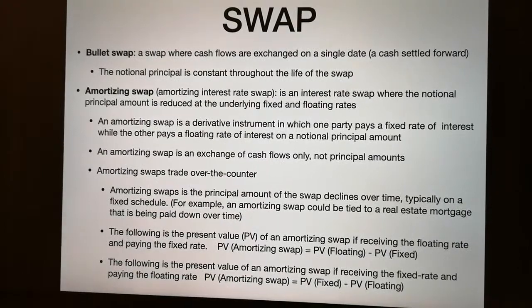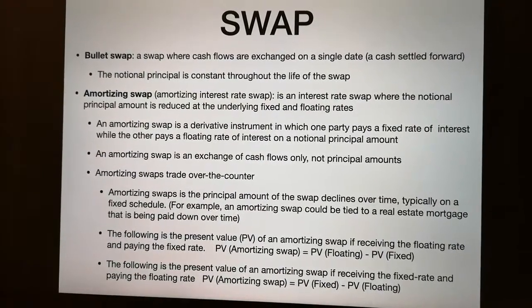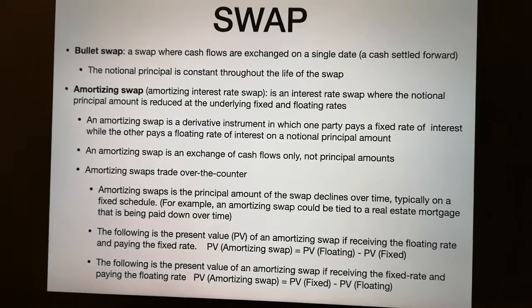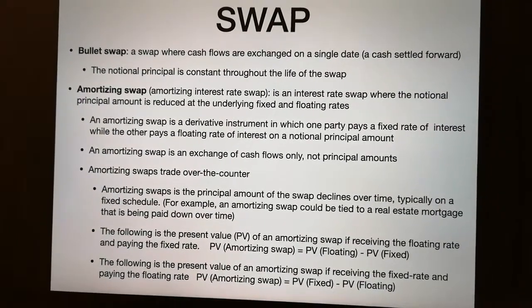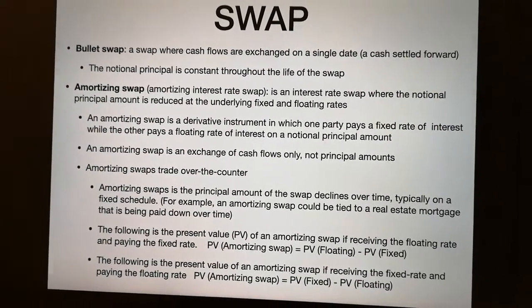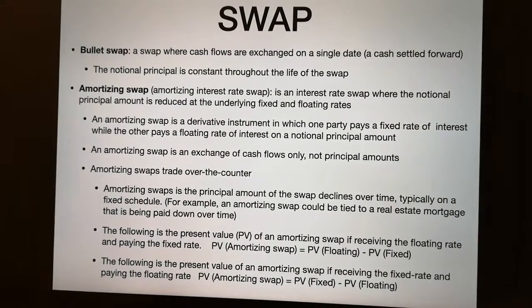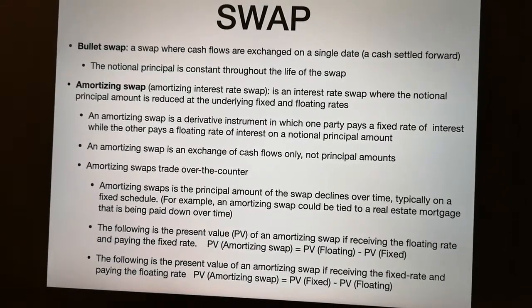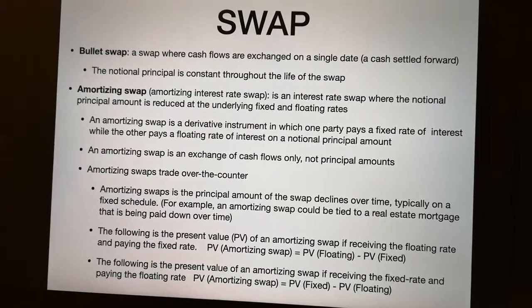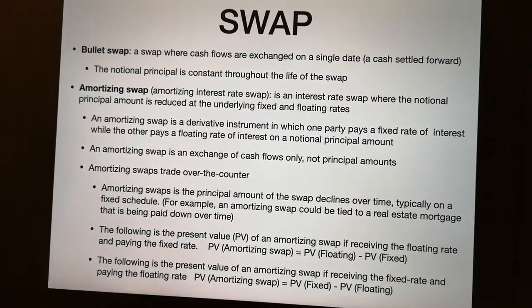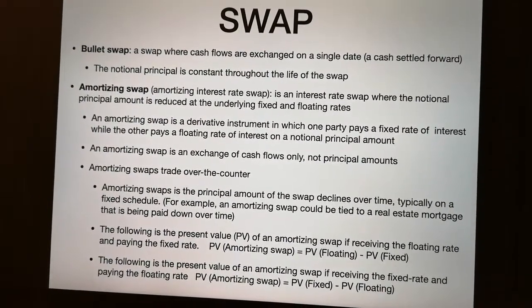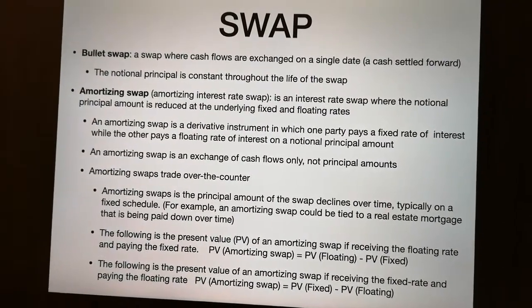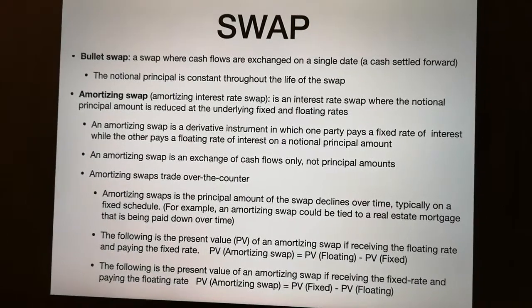The following is the present value, PV, of an amortizing swap. If you receive the floating rate and pay the fixed one, the PV will be the PV floating minus the PV fixed. On the other side, if you receive the fixed rate and pay the floating one, the PV of the amortizing swap will be the PV fixed minus the PV floating.